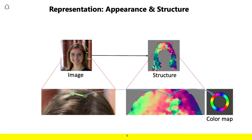For representation in these works, we disentangle the appearance and structure of the hair. By appearance, we refer to the color of the hair as modified by the overall ambient lighting, and the structure can be represented as the overall orientation of the hair and a mask indicating its valid regions in the image. You can see examples of this here, with the image of the hair in a close-up showing its appearance on the left, and an orientation map color-coded as seen on the right.